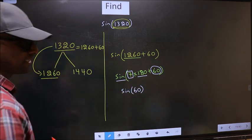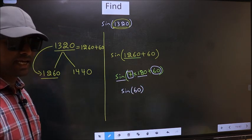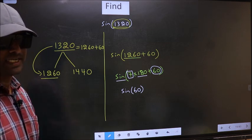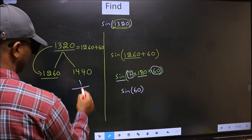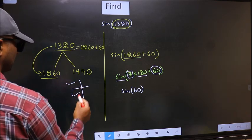And 7 is odd. And all the odd multiples of 180, they lie in either the second or the third quadrant.